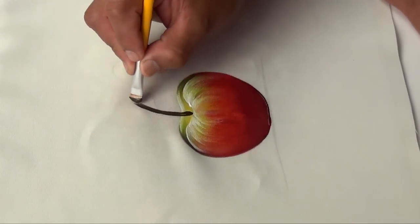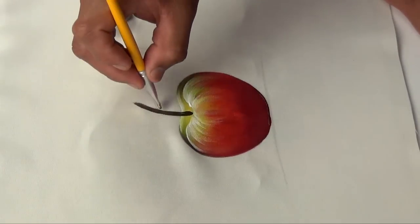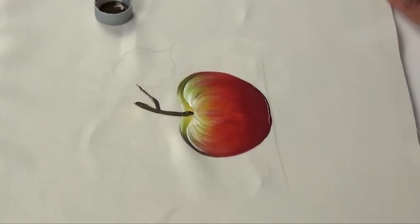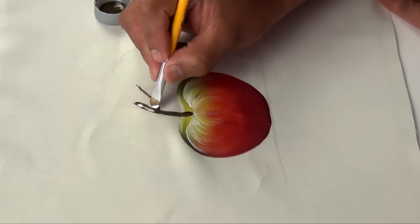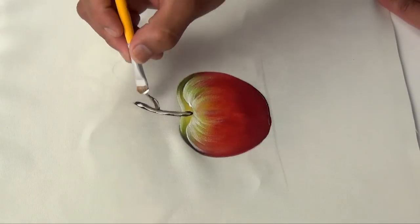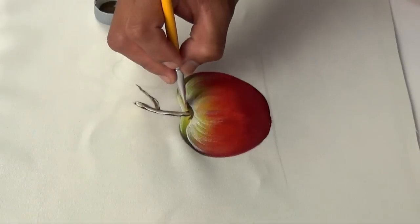As you see, the apple is almost finished. We'll work the stem with sepia, sepia color, and the little stem of the leaf too. We illuminate, a small shadow here where the stem comes out.